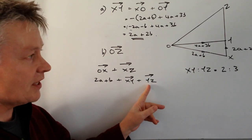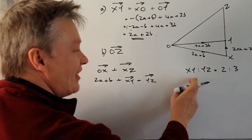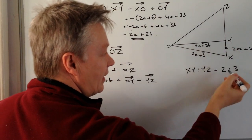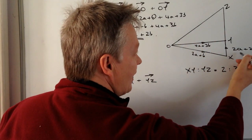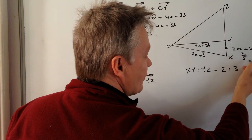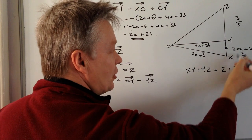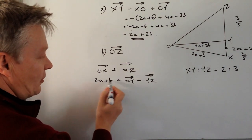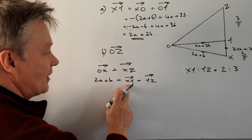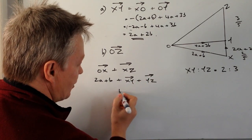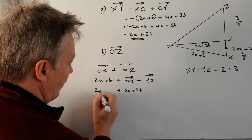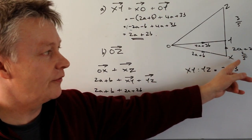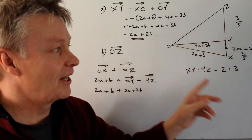I don't know YZ directly, but the information given is a ratio where X to Y is two parts and Y to Z is three parts. So XY is two-fifths of the way and YZ is three-fifths. Since XY = 2a + 2b is two-fifths of the whole, then YZ — which is three-fifths — is going to be 3a + 3b.